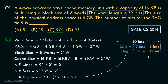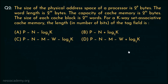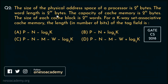Now let's understand this in a better way with the next question. Consider this question — it came in the GATE Computer Science 2018 paper. The size of the physical address space is 2 to the power p bytes, the word length is 2 to the power w bytes, the capacity of cache memory is 2 to the power n bytes, and the size of each cache block is 2 to the power m words. We need to find the number of bits of the tag field for a k-way set associative cache.